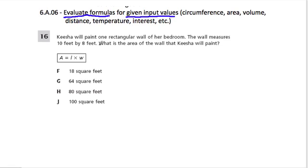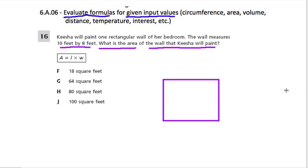Here we have the first problem. Keisha will paint one rectangular wall of her bedroom. The wall measures 10 feet by 8 feet. What is the area of the wall that Keisha needs to paint? So here we have a rectangle, and it's 10 feet by 8 feet. We want to know the area. Well we multiply 10 feet by 8 feet. Essentially we're finding one row of 10 feet and then multiplying it by a height of 8 feet, and that'll give us the full area inside that we need to figure out what Keisha has to paint this wall.